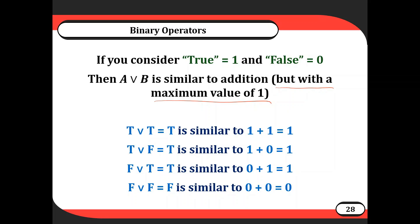The OR operator is similar to addition in math if we consider true equal to one and false equal to zero — though we cap the maximum value to one. So if A is true and B is true, A OR B is true, similar to one plus one equaling one (capped). True OR false equals true, similar to one plus zero equals one. The only time we get false is if both are false — zero plus zero equals zero.